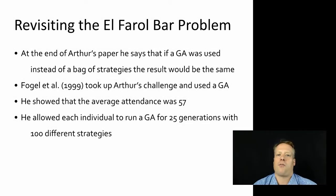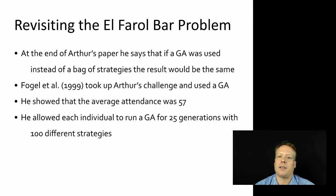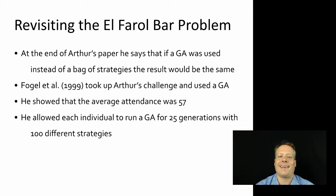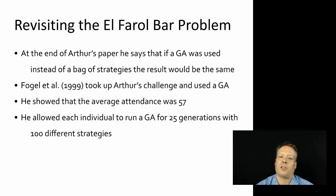Let's go back to the original El Farol bar problem result. In the NetLogo model implementation, Arthur suggested that each agent had a bag of strategies. They would receive those strategies from some sort of oracle at the beginning of the game, and then consider which strategy would create the best results based on past performance. At the end of Arthur's paper, he says that if a genetic algorithm was used instead of a bag of strategies, the results would be roughly the same.